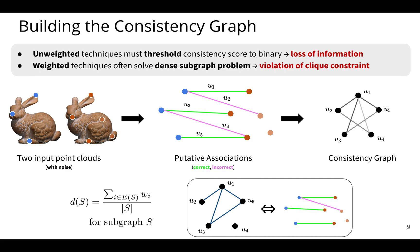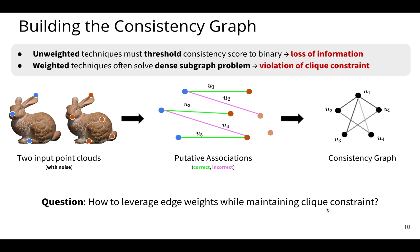On the other side of things, there are algorithms in the weighted category. And what these algorithms tend to do is to formulate a dense subgraph problem. So density of a subgraph is shown, the expression for is shown here in the bottom left, it's the sum of the edge weights over the number of vertices in the subgraph. And the problem here is that it violates the clique constraint. A subgraph need not be a clique. And in fact, the algorithm may choose to add an arbitrary edge here in the consistency graph, because it increases the density metric. But this yields choosing incorrect associations.